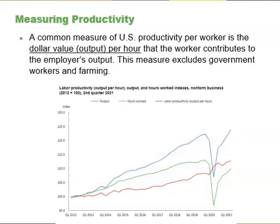A common measure of US productivity per worker is dollar value per hour the worker contributes to the employer's output. This measure excludes government workers because their output is not sold in the market and so their productivity is hard to measure. It also excludes farming, which accounts for only a relatively small share of the US economy.